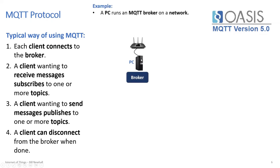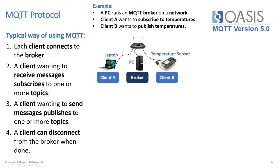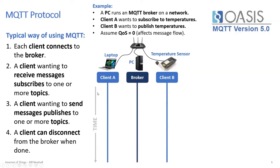Here's an example with a PC running an MQTT broker on a Wi-Fi network, a laptop as Client A, and a temperature sensor as Client B. Client A wants to subscribe to temperatures; Client B wants to publish temperatures. This assumes QoS 0. Time goes downward in this diagram showing the message flow between clients and the broker.